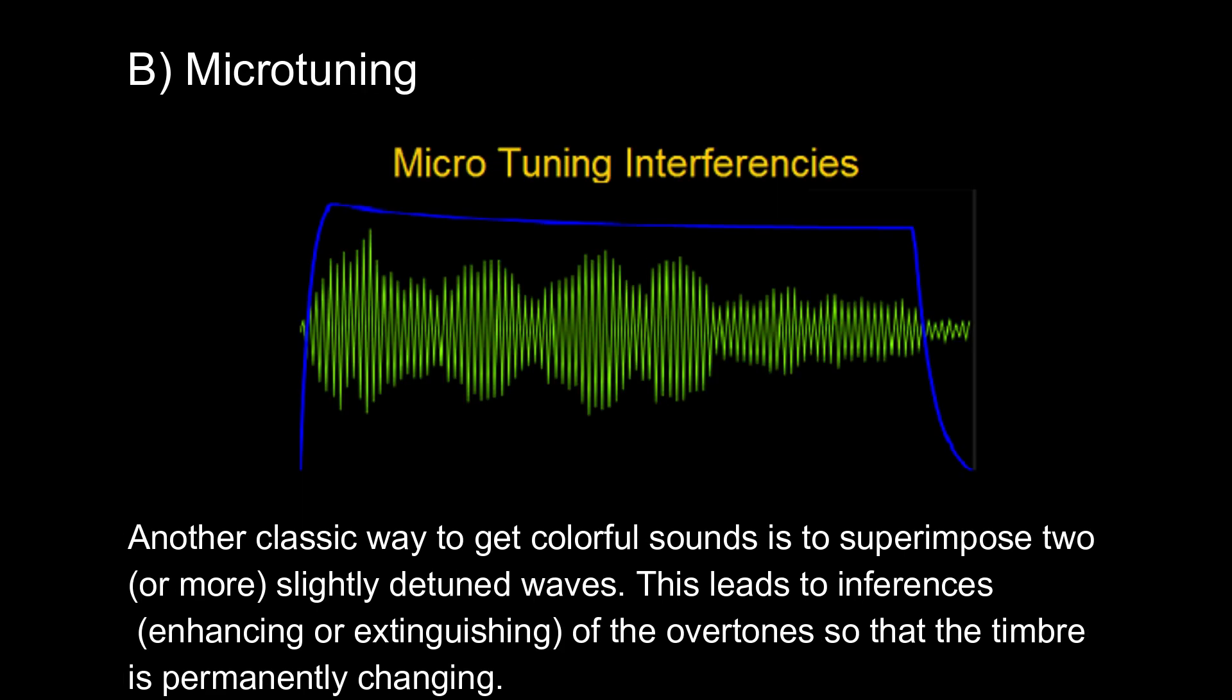B. Microtuning. Another classic way to get colorful sounds is to superimpose two or more slightly detuned waves. This leads to interferences, enhancing or extinguishing of the overtones, so that the timbre is permanently changing.